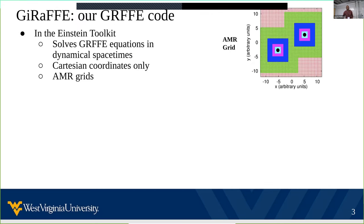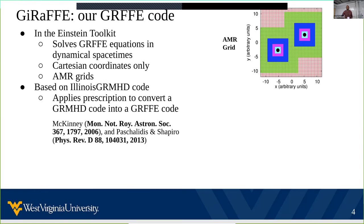My collaborator developed our own GRFFE code called Giraffe. Giraffe is housed entirely within the Einstein Toolkit and solves the GRFFE equations in fully dynamical spacetimes using Cartesian AMR grids. Giraffe was developed based on the prescription described by McKinney as well as by Pascalidis and Shapiro, where they took a GRMHD code — in this case the open source IllinoisGRMHD code — and converted it into a GRFFE code using this prescription.